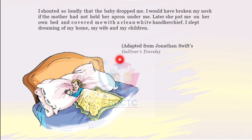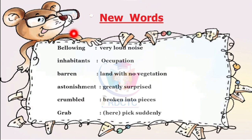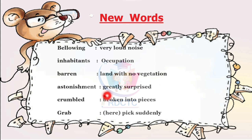This story is adapted from Jonathan Swift's Gulliver's Travels. Now we see the new words from the text. Bellowing means very loud noise. Inhabitants means occupants. Barren means land with no vegetation. Astonishment means greatly surprised. Crumbled means broken into pieces. Grab means to take suddenly.